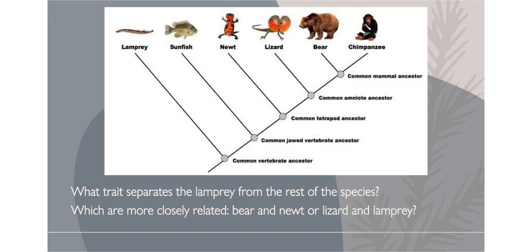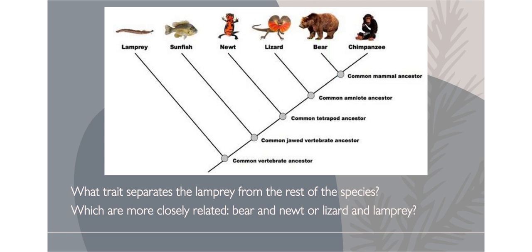For a quick practice: the first question asks what trait separates the lamprey from the rest of the species. The lamprey is the first offshoot on the cladogram, and the answer is the vertebrate ancestor — the backbone. The second question asks which are more closely related: a bear and a newt, or a lizard and a lamprey? A bear and a newt have two separations between them on the cladogram, while a lizard and a lamprey have three. Because the bear and newt are closer together, they are more closely related.